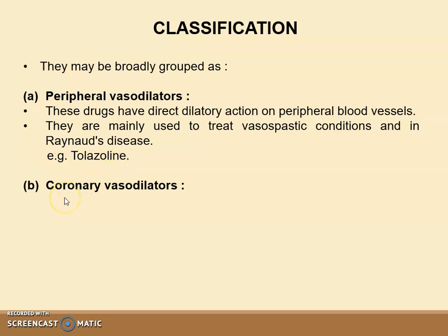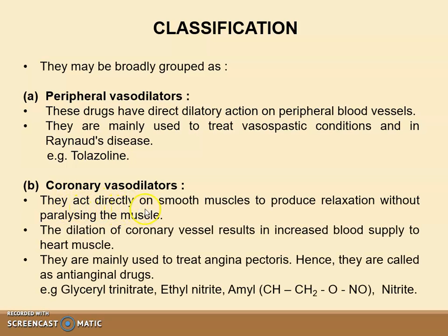The next class is coronary vasodilators. They act directly on smooth muscle and produce relaxation without paralyzing the muscles. The dilation of coronary vessels results in increased blood supply to the heart muscle. They are mainly used to treat angina pectoris and hence are also called anti-anginal drugs. For example, glyceryl trinitrate, ethyl nitrate, and amyl nitrite.